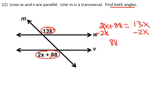88 is the only thing left on that side. The equal sign comes down. 13x minus 2x is 11x. It becomes a one-step equation. You divide by 11, and x equals 8.